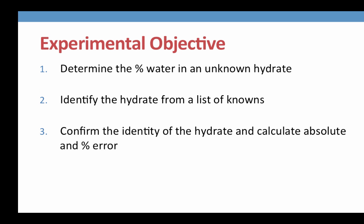The experimental objective is to determine the percent water of an unknown hydrate, and then to identify that hydrate from a list of knowns. You will then confirm the identity of the hydrate with your lab instructor and calculate the absolute and percent error of your experiment.